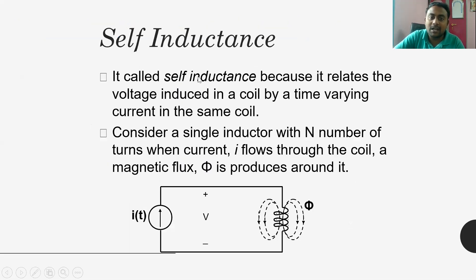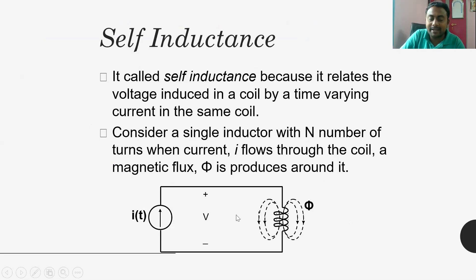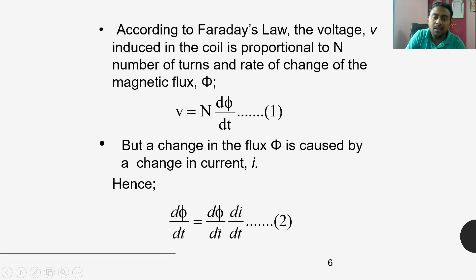Our objective is to find the value of self inductance. Self inductance relates to the voltage induced in a coil by a time-varying current in the same coil. As shown in the basic diagram, i(t) is the time-varying current flowing through the coil. Because of that current, flux is generated, and that flux produces a potential across the terminals. From Faraday's second law, the voltage v equals N·dΦ/dt.